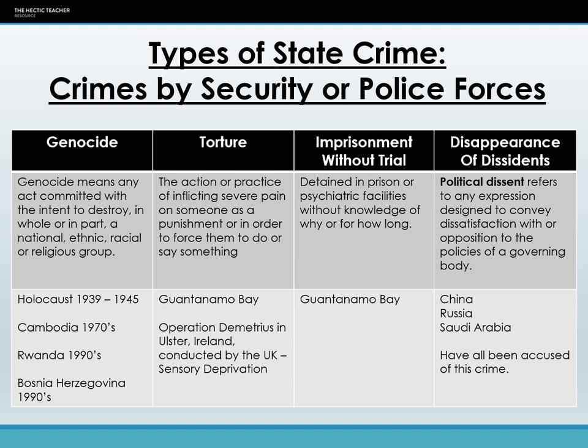The next type of state crime is crimes by security or police forces, which can be grouped into four sections: genocide, torture, imprisonment without trial, and the disappearance of dissidents. We have many examples of these throughout history.